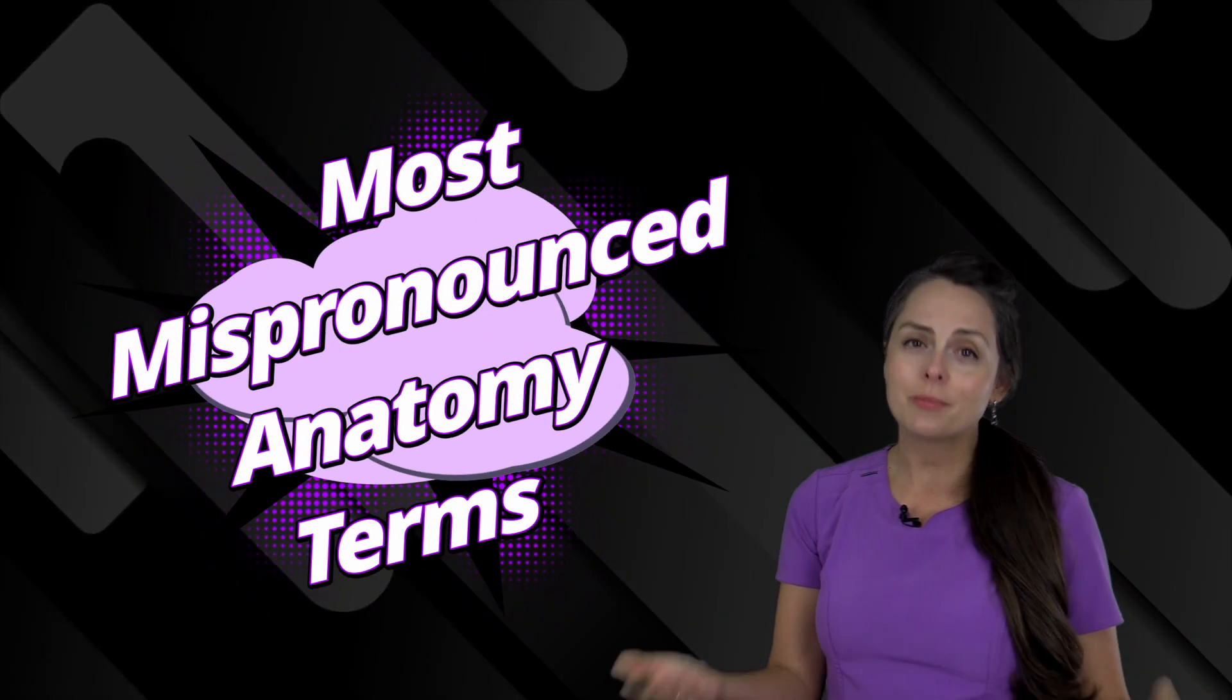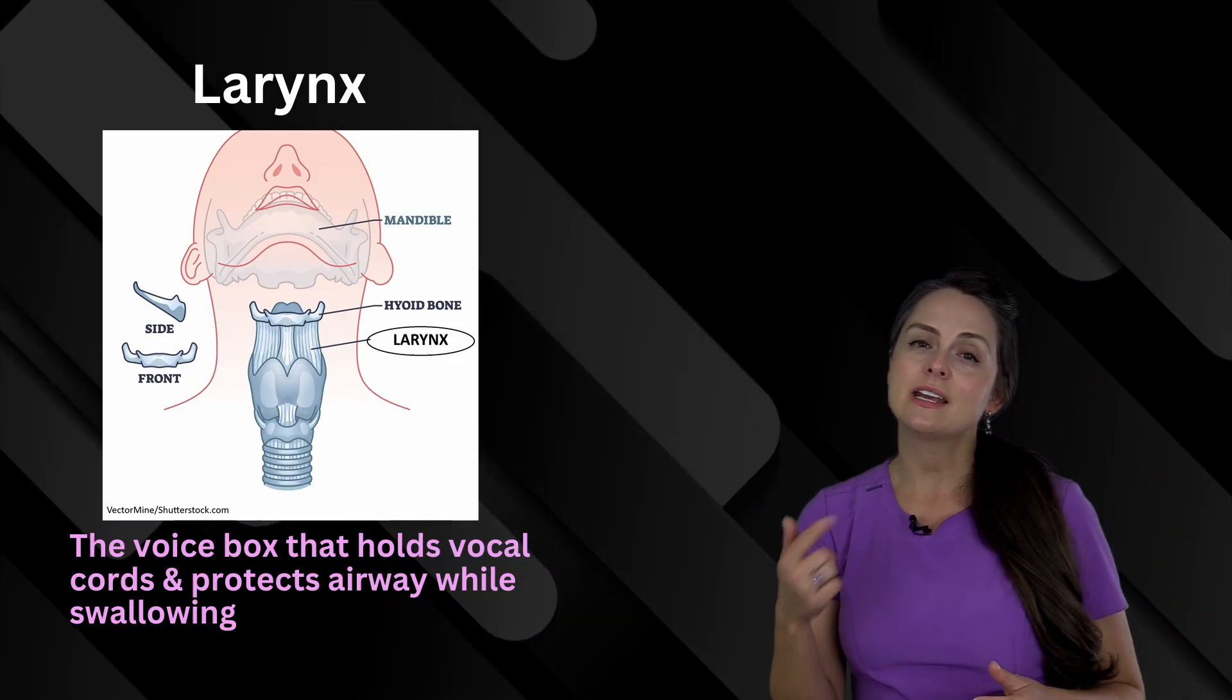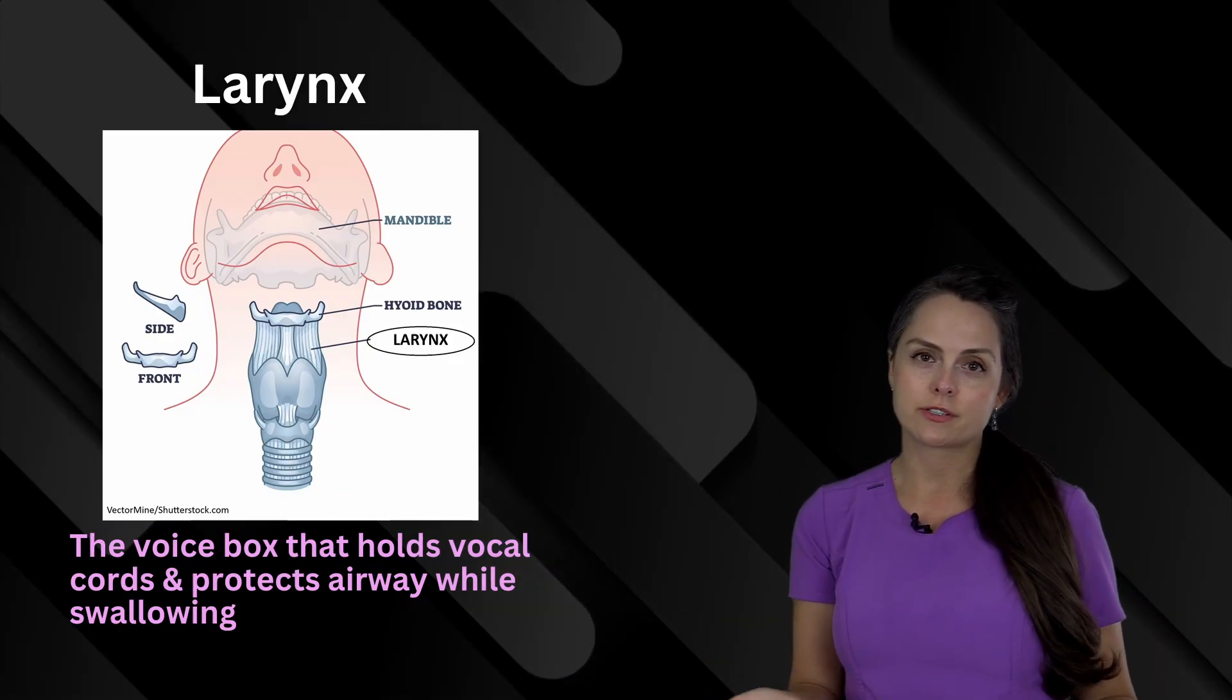Here's some anatomy terms that you probably have mispronounced, because I know I have. First up is larynx, and this is located in your neck and it holds your vocal cords.